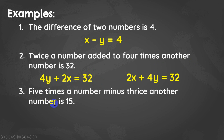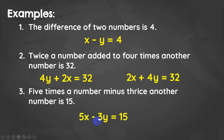For the last example: 'five times a number minus three times another number is 15.' There are two numbers involved, represented by x and y. The answer is 5x minus 3y equals 15.